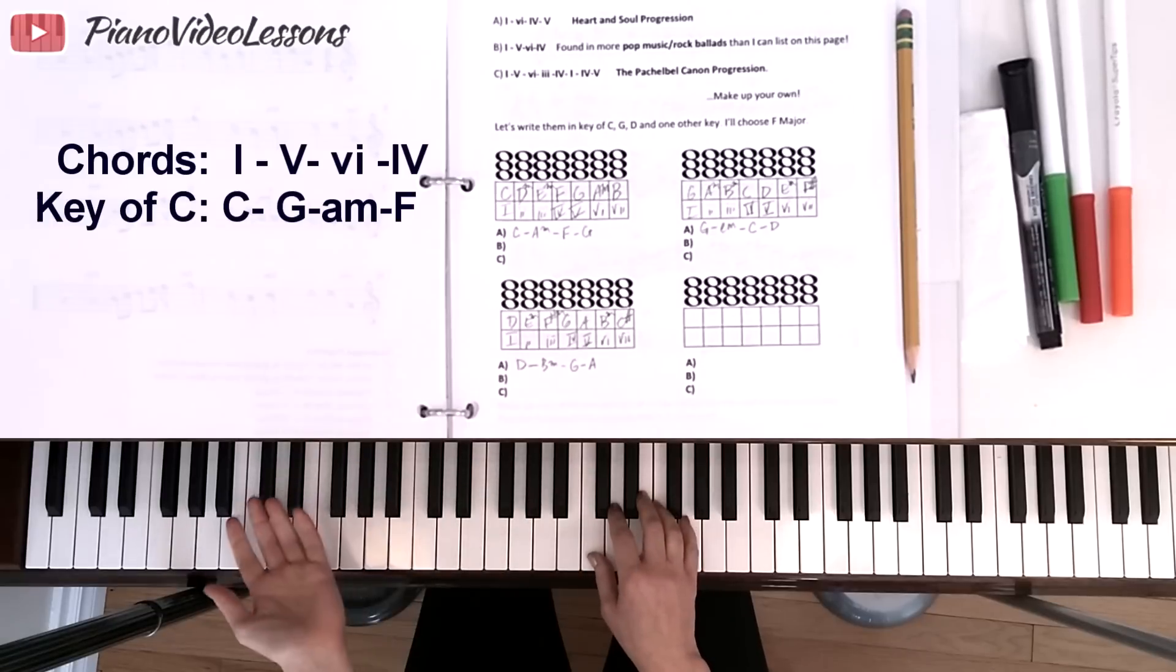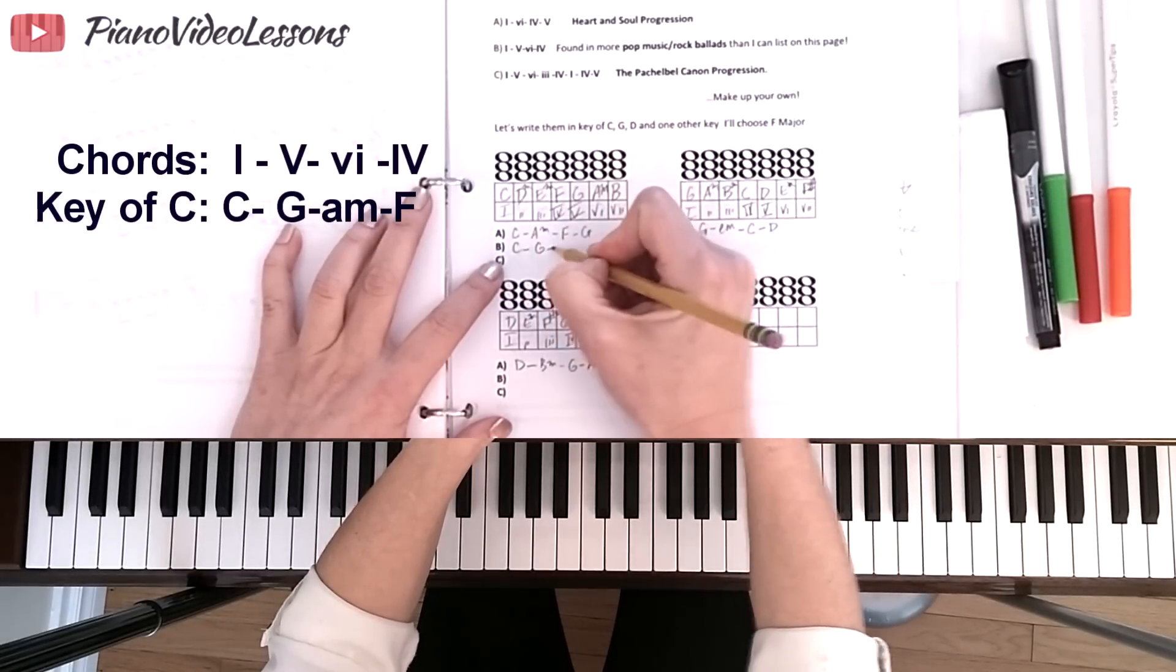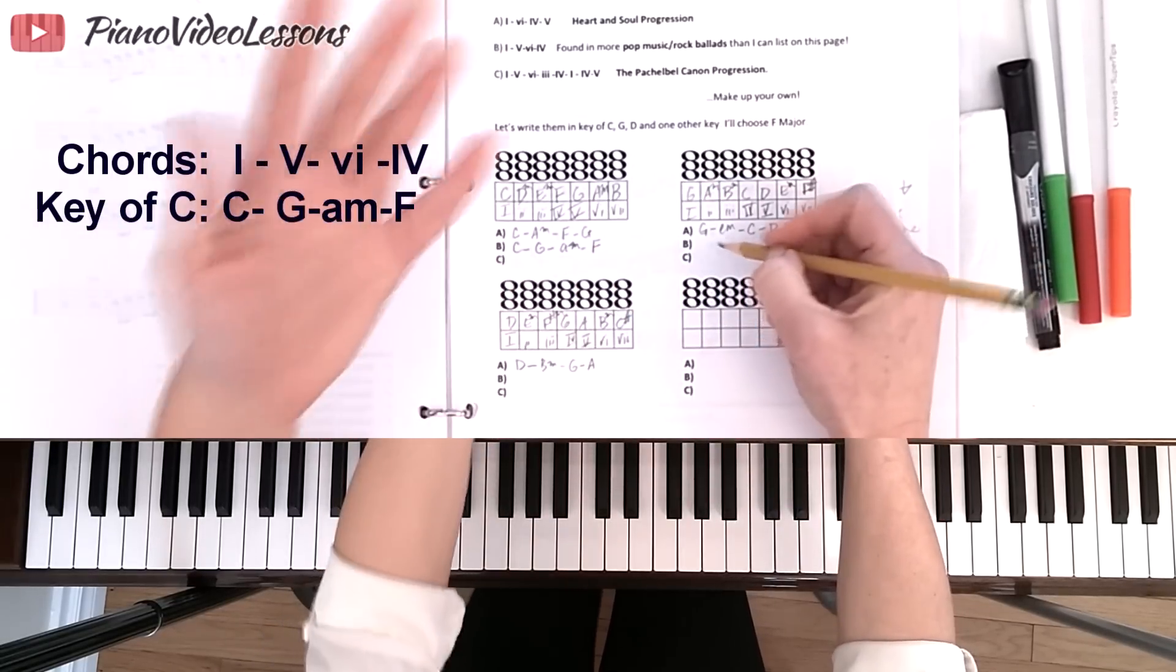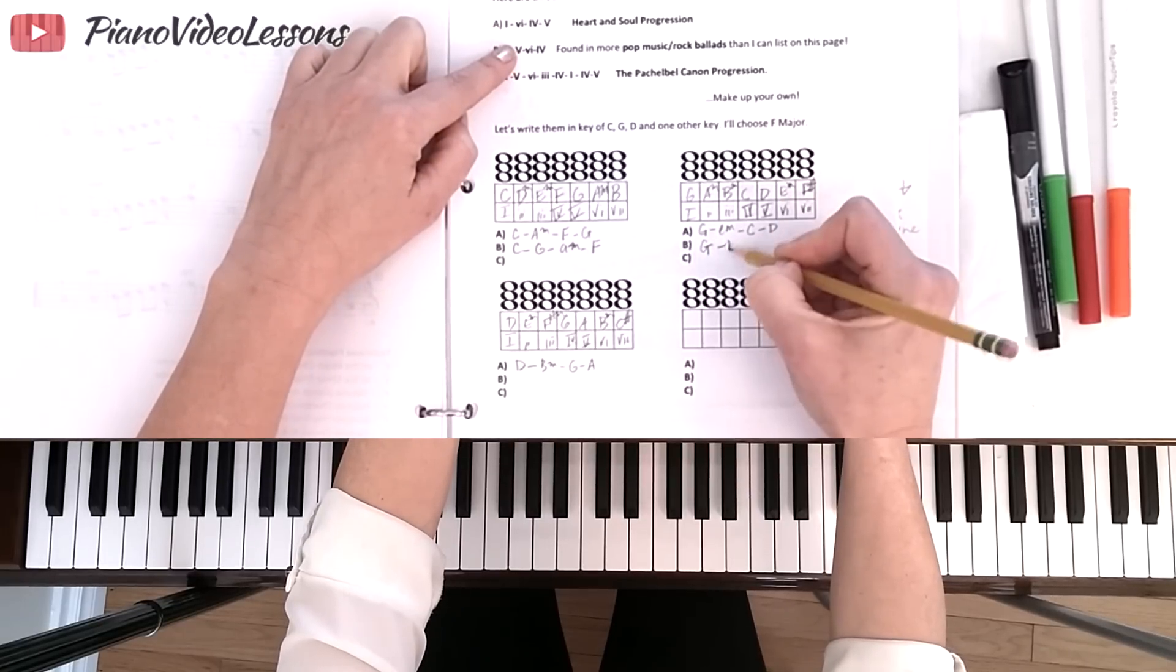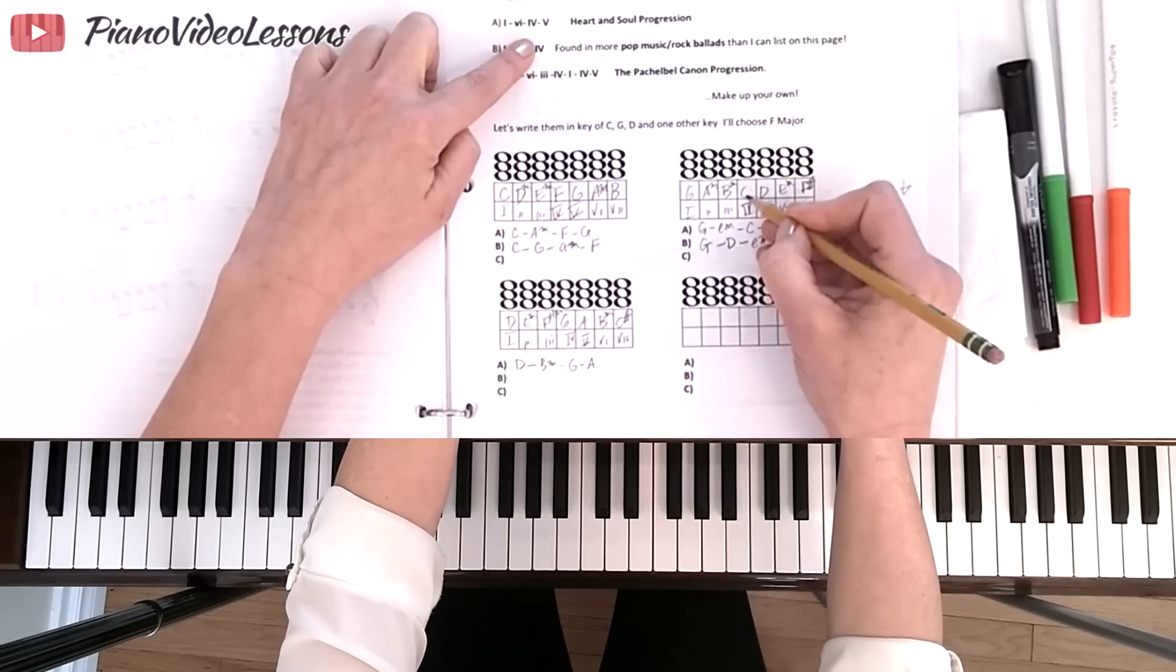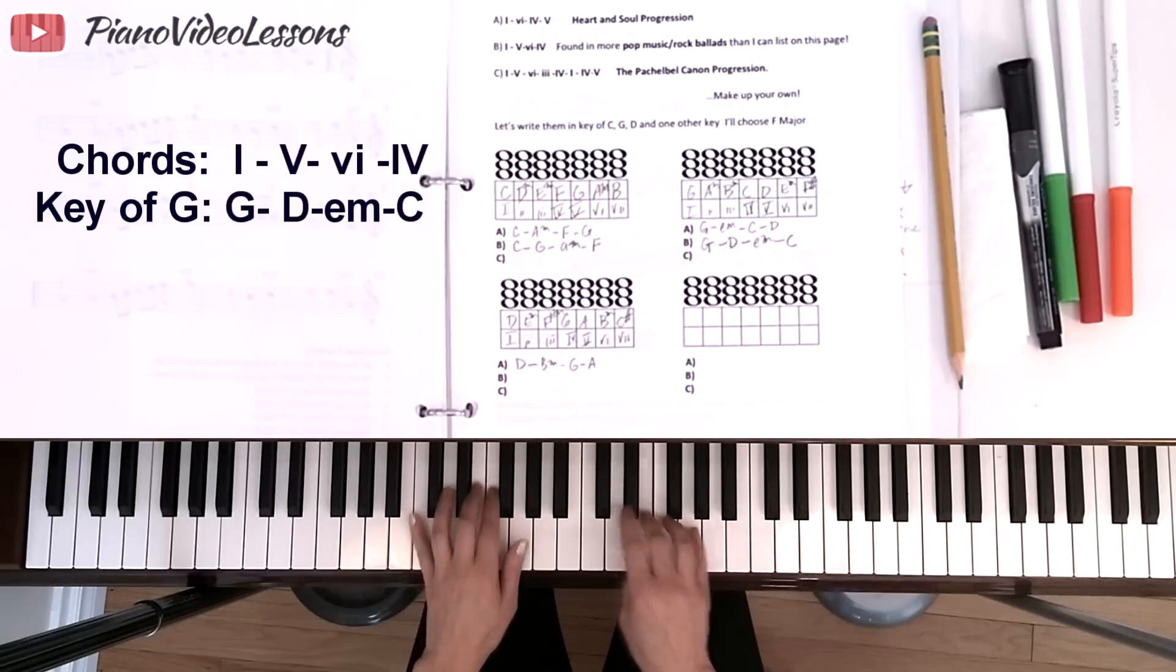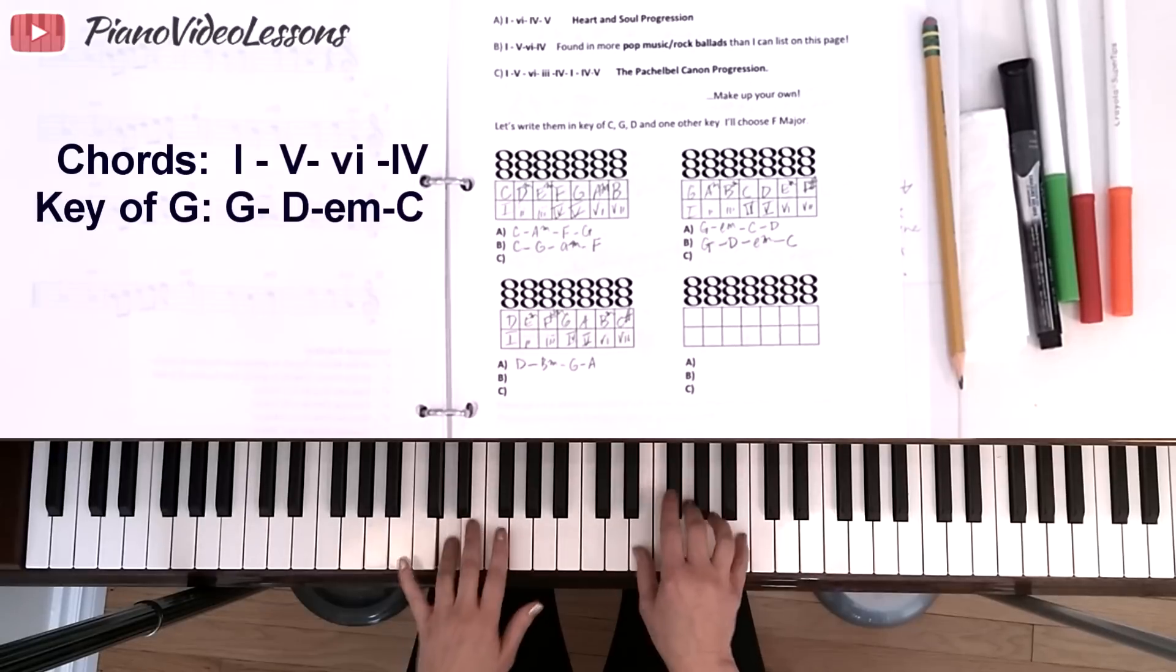This 1-5-6-4 progression is going to be everywhere in songs you play. So why not get used to your fingers playing it? Most of the time we don't play pop music in the key of C. We can write it here in the key of C: 1-5-6-4, so C-G-A minor-F. Let's do it in the key of G. Starting with the 1 chord, we're going to have G. Then the 5 chord, we're going to have D major. Then the 6 chord, E minor. And then the 4 chord, C major. This progression becomes 1-5-6-4: G-D-E minor-C.